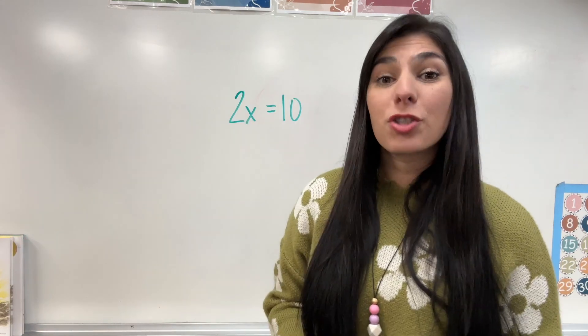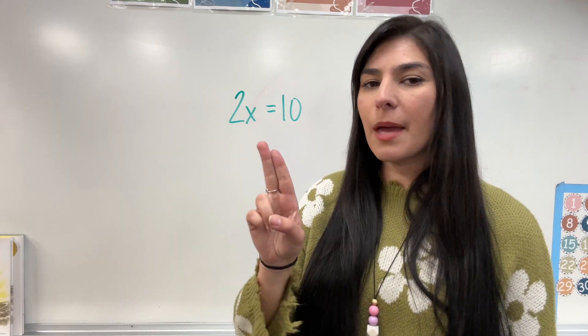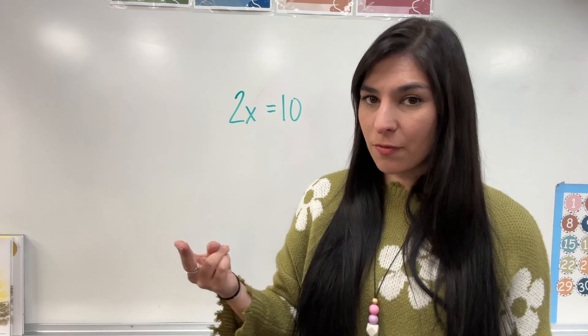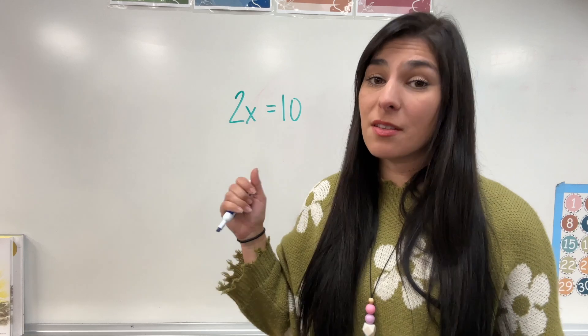For our first equation, I have 2x equals 10. Now, because the 2 and the x are right next to each other, that means we're multiplying. What is the opposite, the inverse operation of multiplication? Well, the inverse, the opposite, is division.